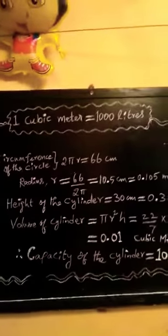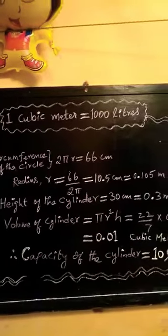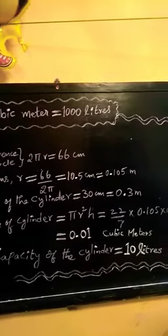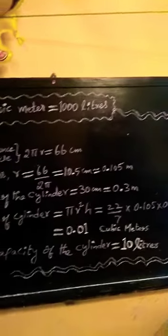Circumference of the circle formula is 2πr and it is equal to 66 cm. Radius r equals 66 by 2π, which is 10.5 cm, that is equal to 0.105 meters.